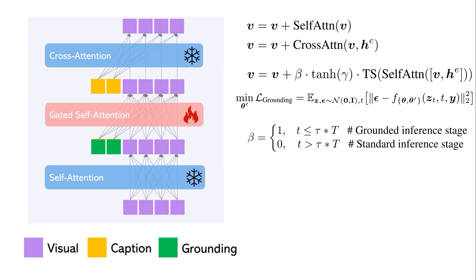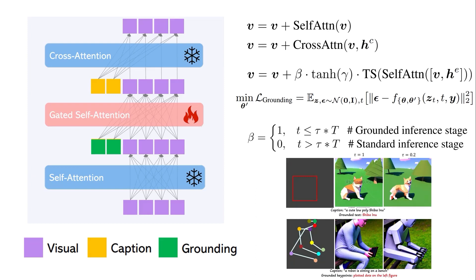To show how this influences the output, we can see a sample where either a bounding box or keypoints are used as grounding instructions. In the middle column, if we do not apply the beta scheduler and keep it always at 1, the generated sample might contain watermarks — because training images gathered from the internet sometimes have watermarks. Or if we want the generated person to be a robot using keypoints, without the scheduler the generated image is no longer a robot. But if we remove beta after some steps, the model has more flexibility to focus on generating a robot instead of strictly following the keypoints.